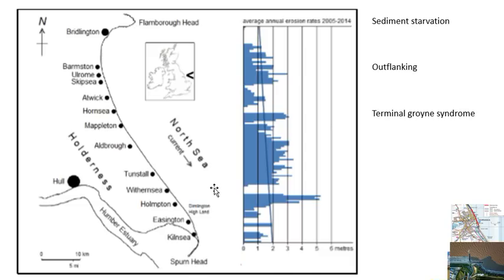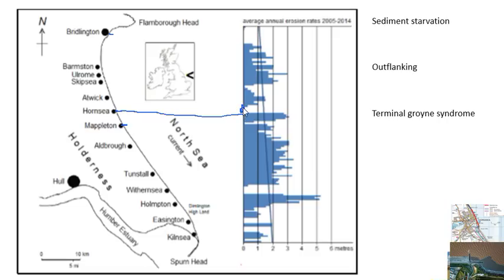If we look at a couple of examples of places protected with groins: Bridlington, Hornsea, and Mappleton are three towns protected with groins. If we draw a line across the graph, at Hornsea the average annual erosion rate is zero — no erosion, with a seawall and groins. At Mappleton, same thing — no erosion because of seawall and groins. Also at Withernsea — no erosion, average annual erosion rate is zero.